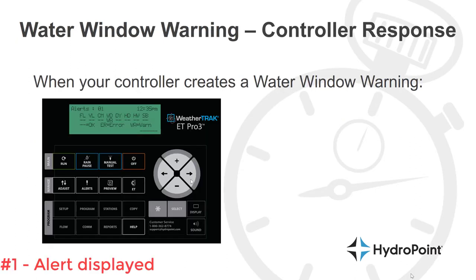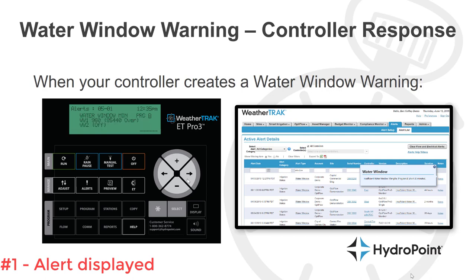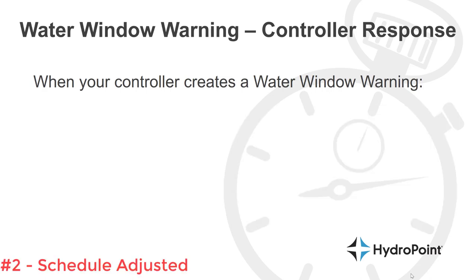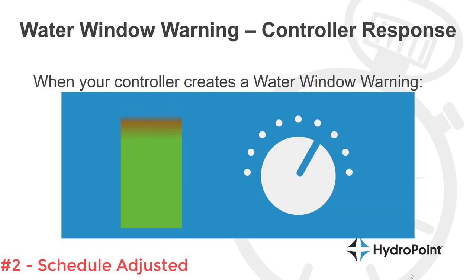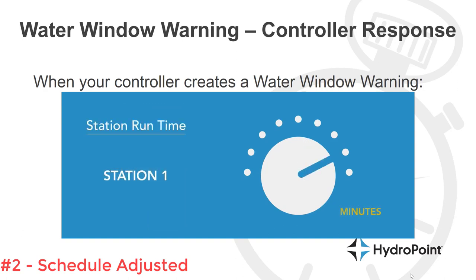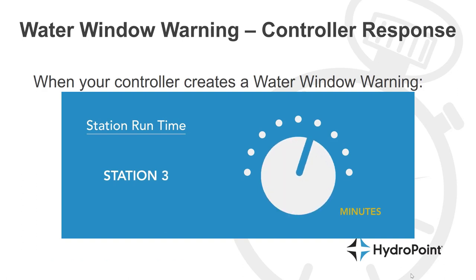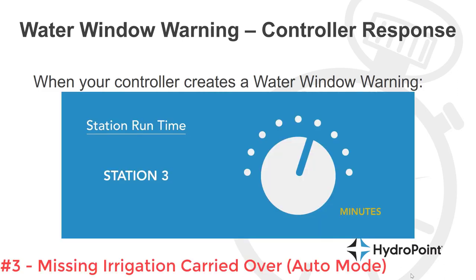When a water window warning is created, the first thing that happens is that alert is immediately posted at the controller and online, so any interested managers can see it. The second thing that happens is the controller will turn down all of the scheduled irrigation to fit inside the scheduled watering window, and it accomplishes this by turning down all stations incrementally so that every station gets at least some water.